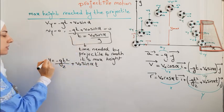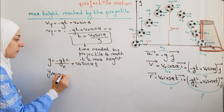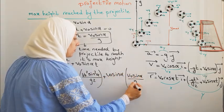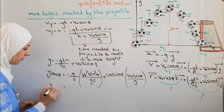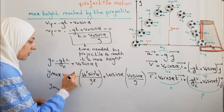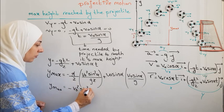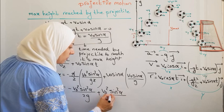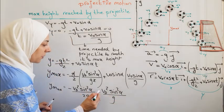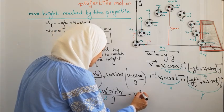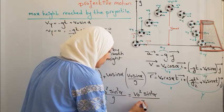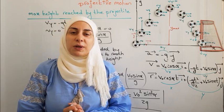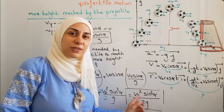We substitute that time into the y equation to find y_max. After substituting and simplifying, we get y_max = v₀²·sin²(α) / (2g). We use this equation to find the maximum height reached by the projectile for a given initial velocity v₀ and launch angle α.